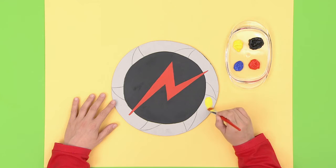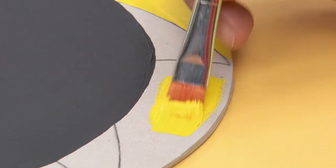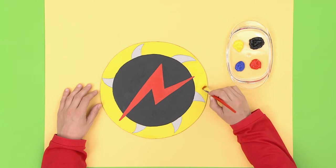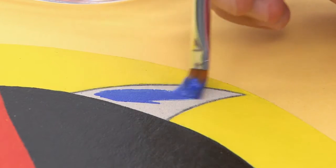Now paint the big circle with yellow. What an amazing color! And finally, color the shark teeth with blue.